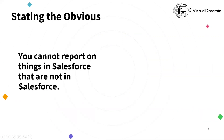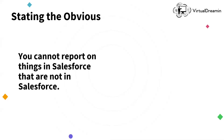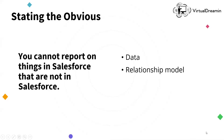So where do we start? Let's start with the obvious: you cannot report on things in Salesforce that are not in Salesforce. You need your data in Salesforce. Data that isn't there can't be reported on. Your relationship model defines which objects can be combined in a report. However, there are also measuring points, and if these measuring points aren't set up properly in Salesforce, you can't leverage them in reports. What you can report on depends not just on data and relationship model, but on your configuration.